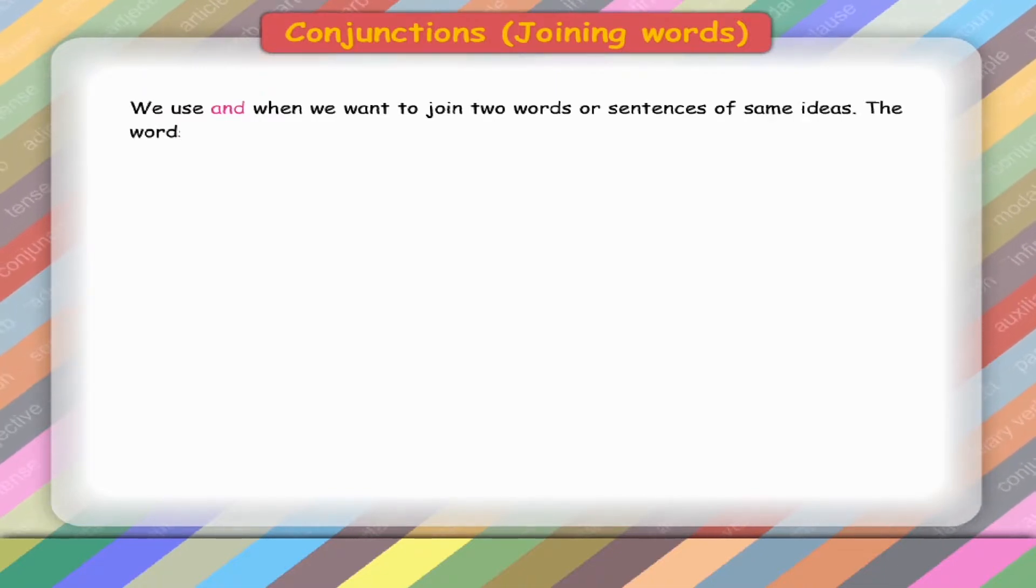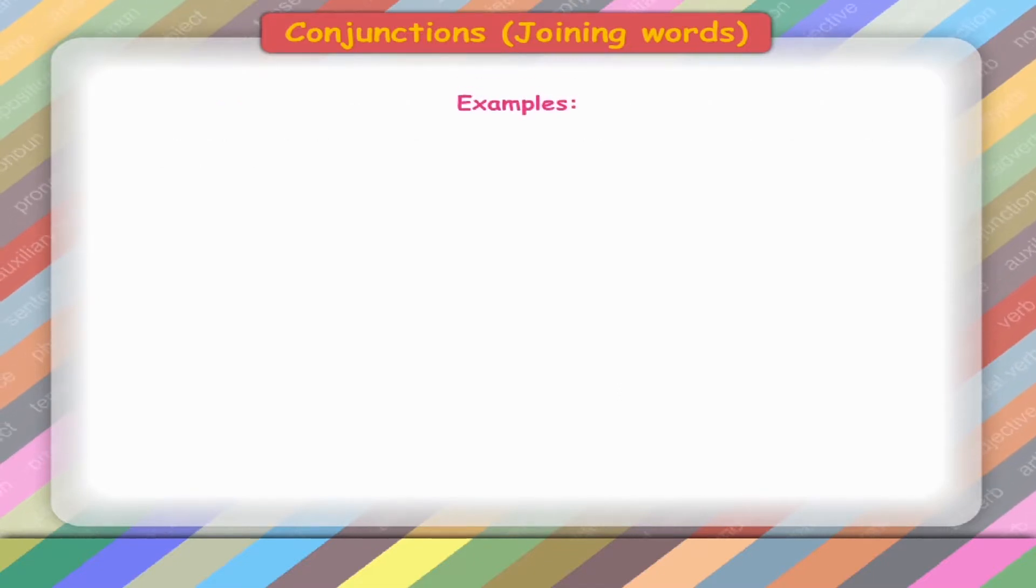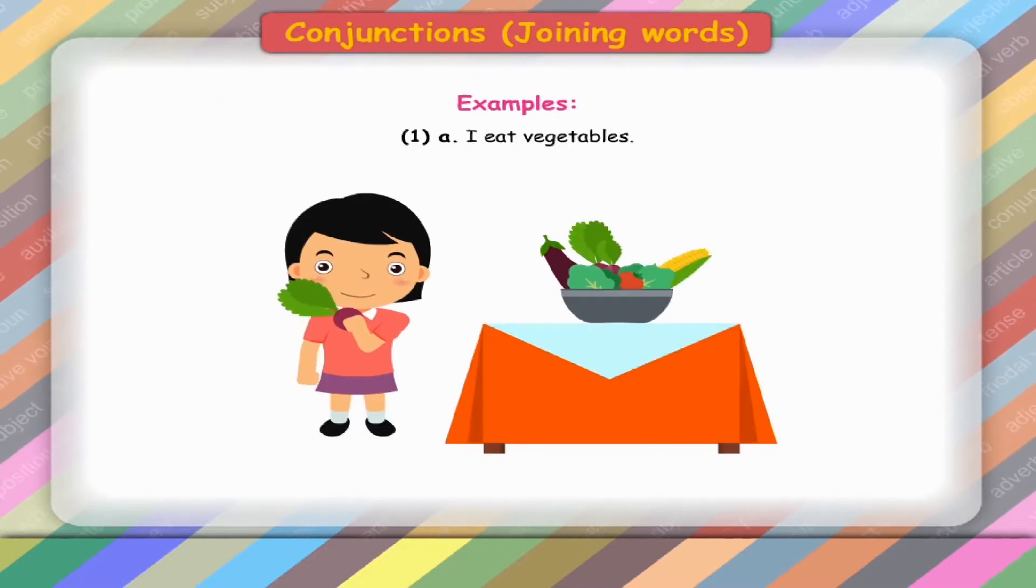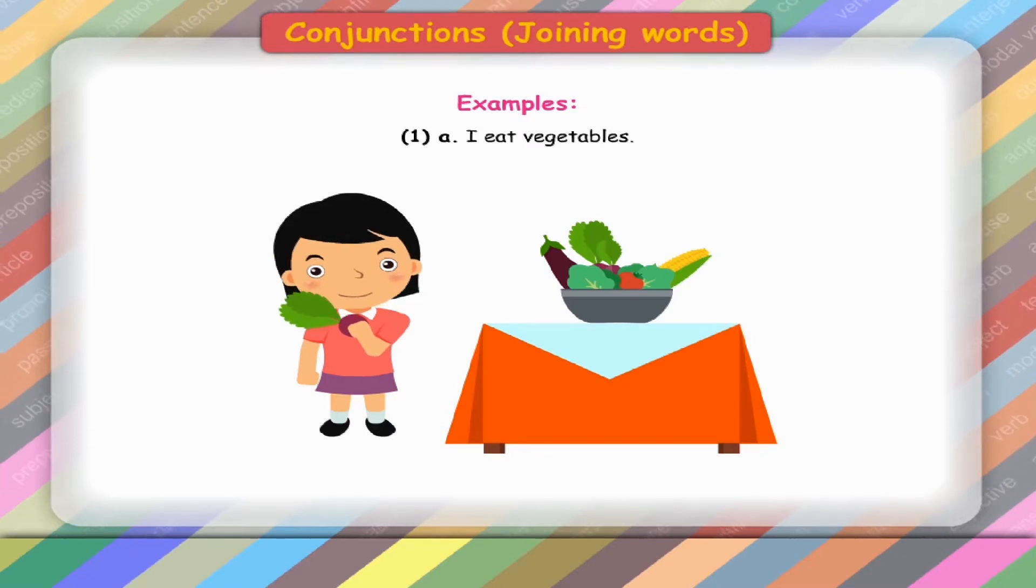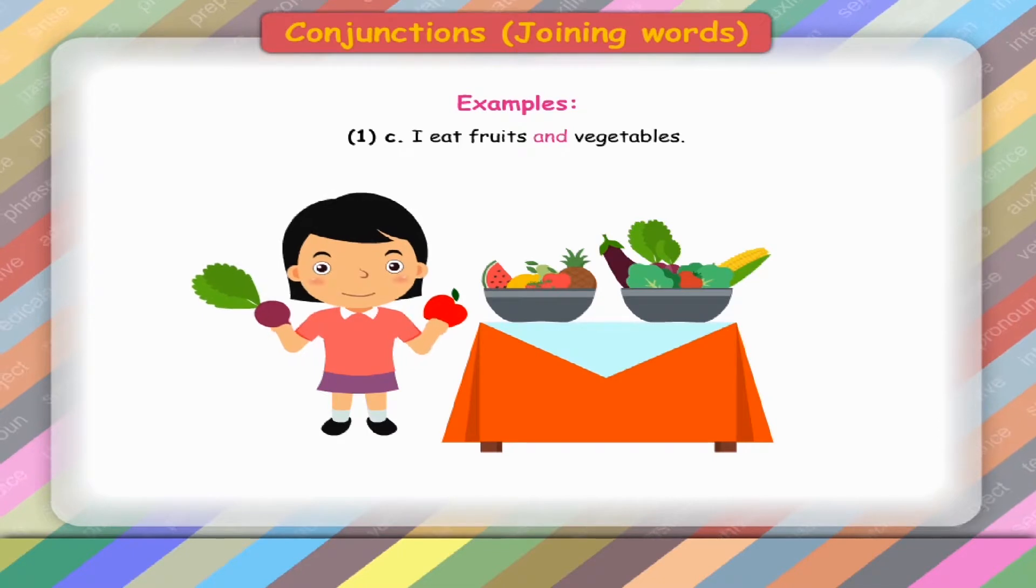The words which are used to join two words or sentences are called joining words or conjunctions. Examples: A. I eat vegetables. B. I eat fruits. C. I eat fruits and vegetables.